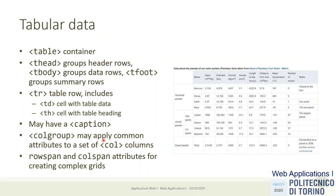Inside the thead, tbody, and tfoot groups — which are just groups of rows — we have individual rows marked by tr. A tr element contains many cells: data cells (td) or heading cells (th). We may have a caption formatted on top or bottom of the table, and we can apply attributes to column groups with colgroup. For advanced formatting, cells can span rows or columns using rowspan and colspan attributes — for example, a cell spanning four rows, or a cell spanning two columns — allowing us to create complex tables.